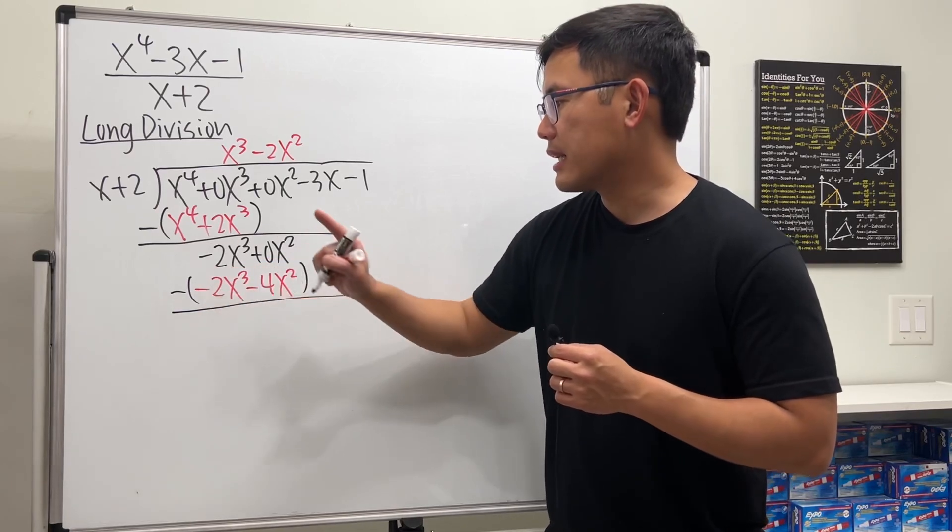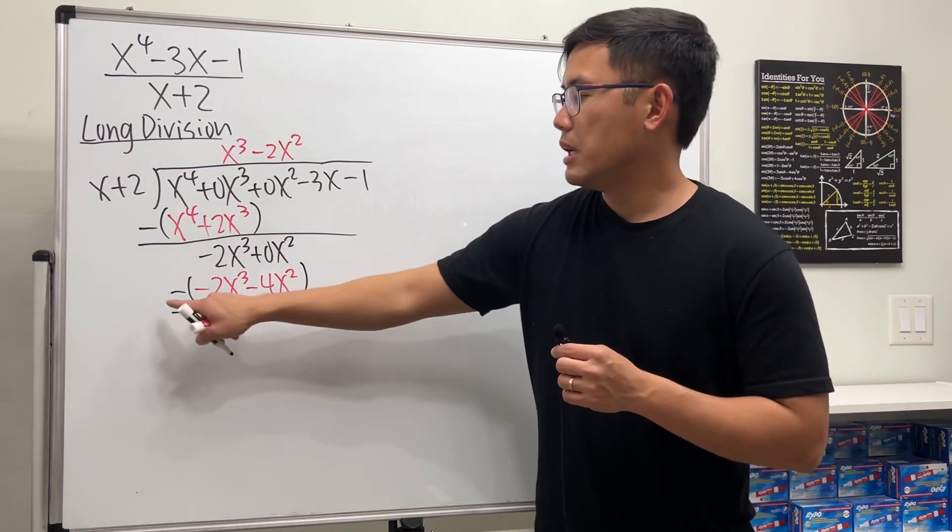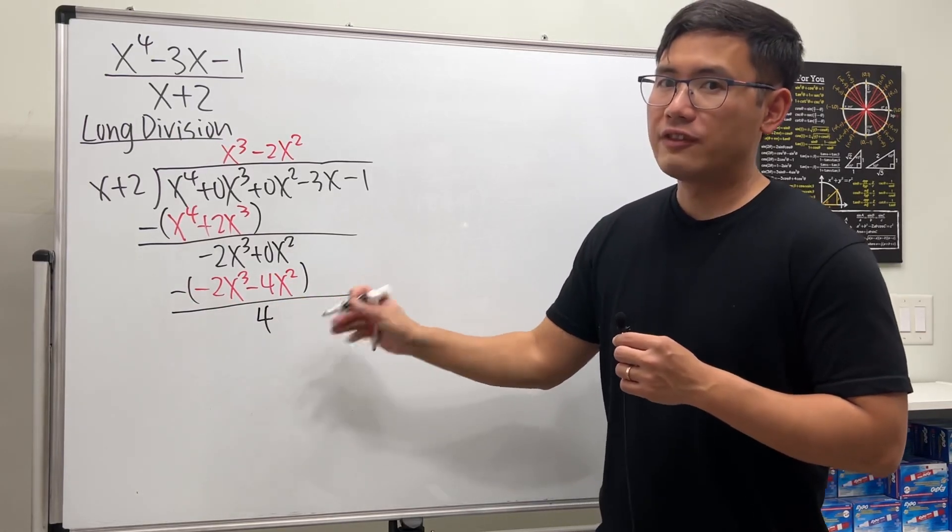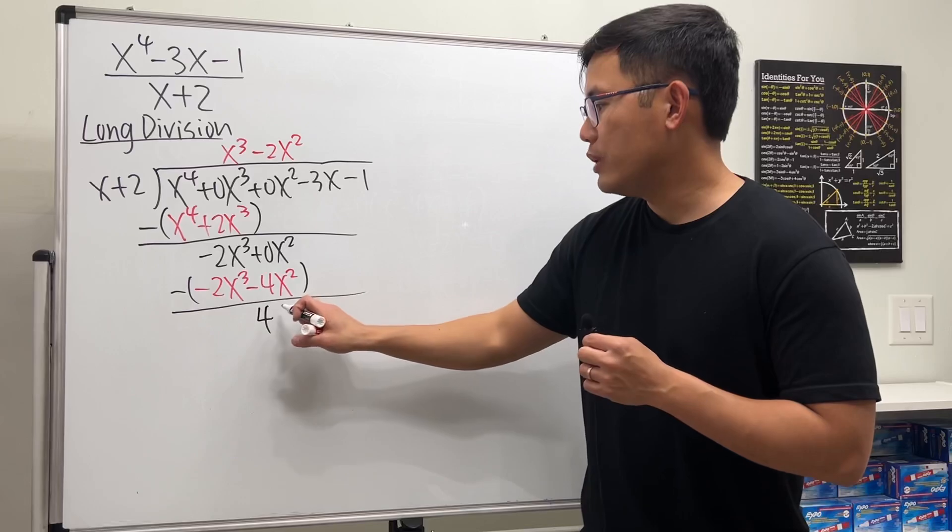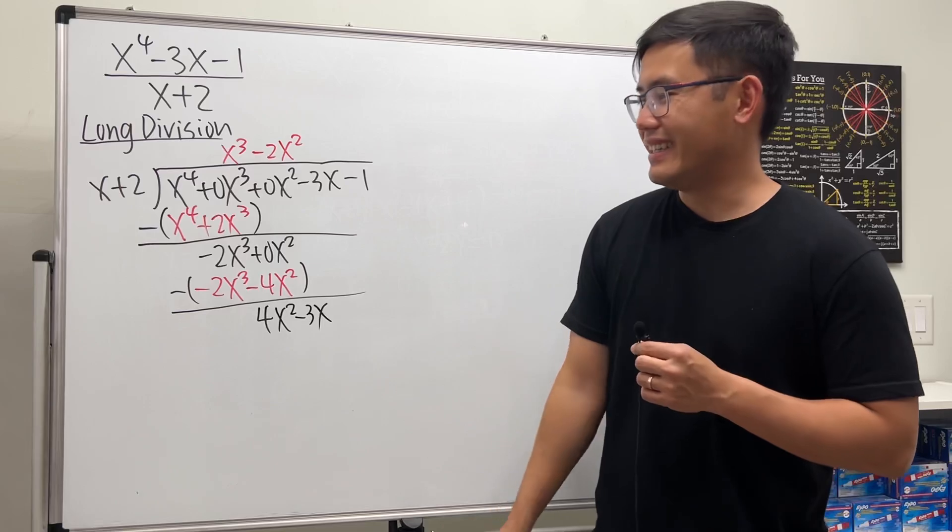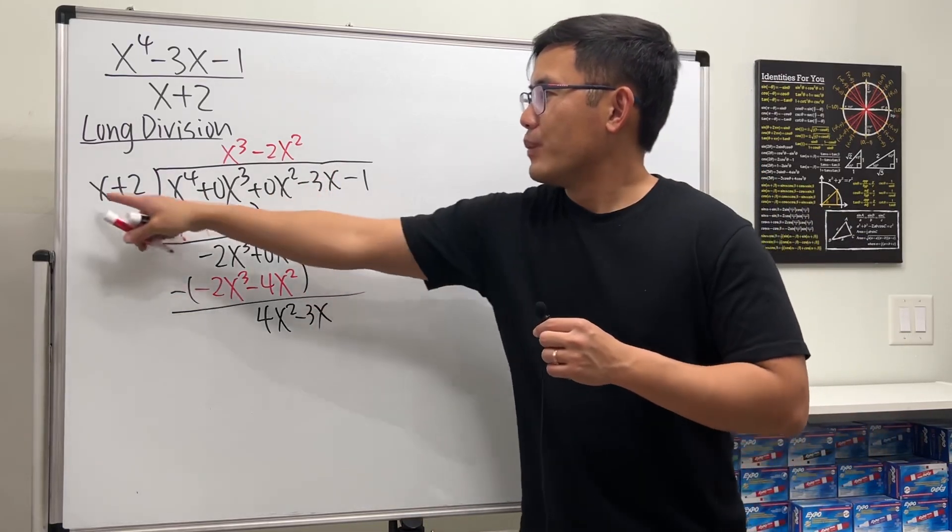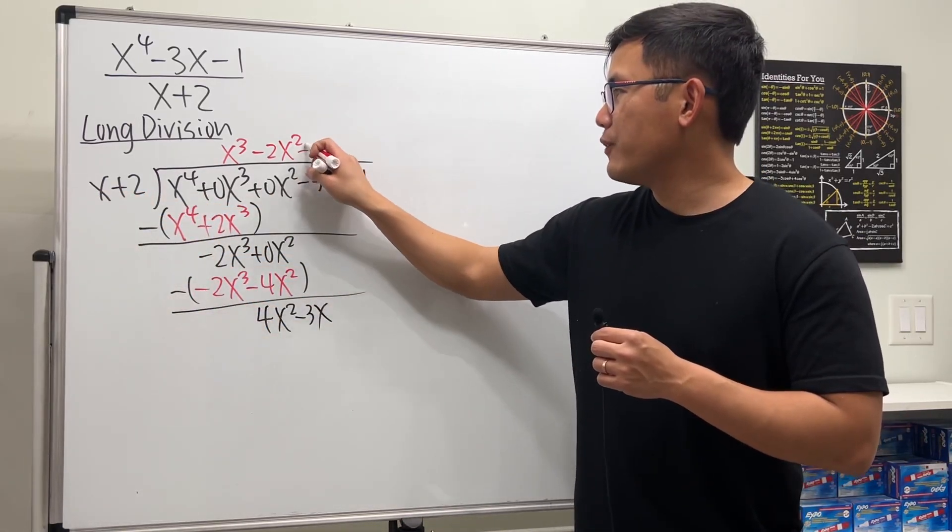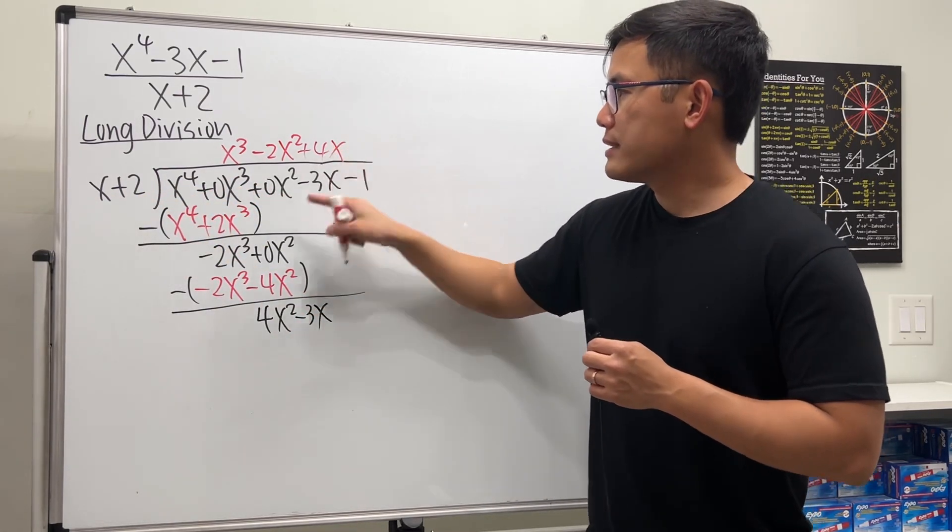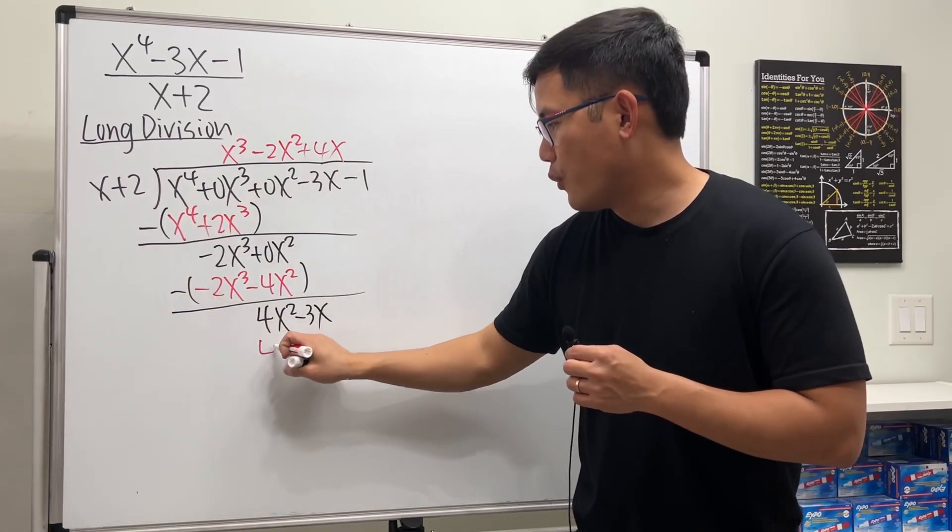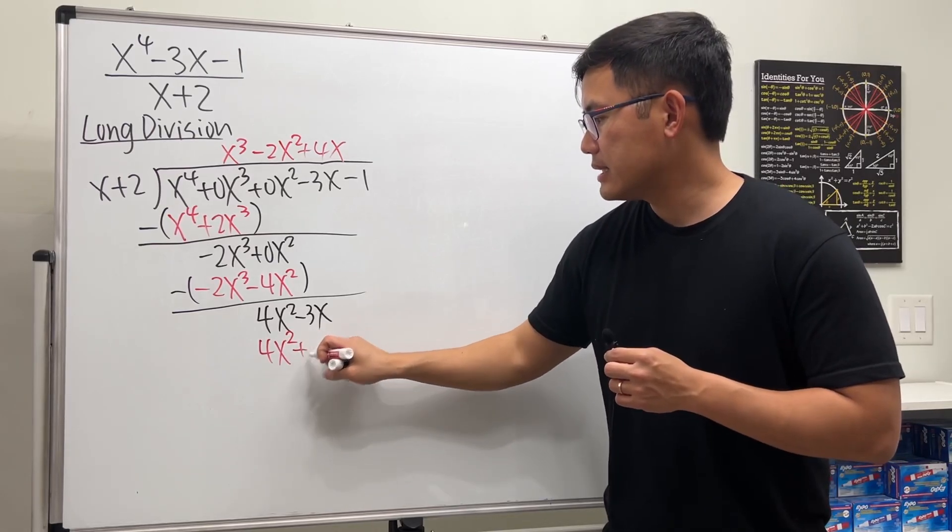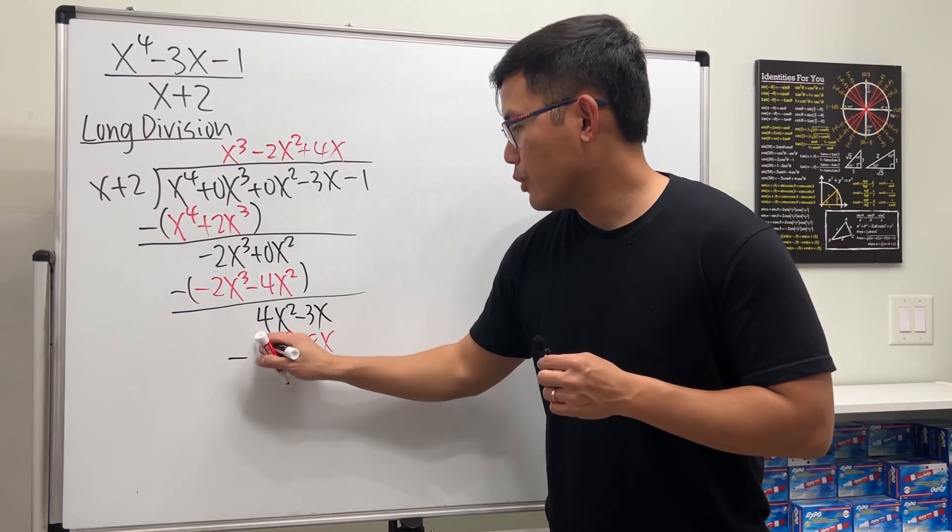This minus that cancel. 0 minus negative 4. 0 plus 4. So it's a positive 4. Be careful with the sign. And then we have the x squared. Continue. Bring down the minus 3x. And then we need the 4. So we add the 4 here. And we also need one more x. So 4x. 4x times x gives us 4x squared. 4x times 2 gives us plus 8x. And one more time we subtract.